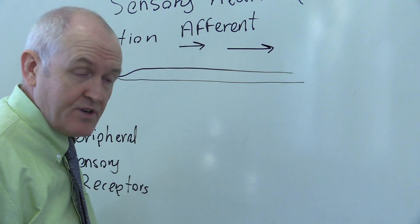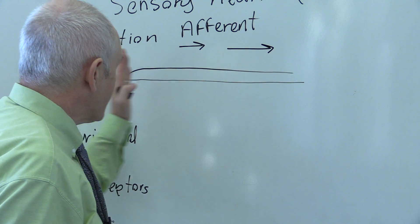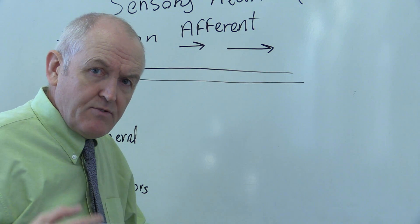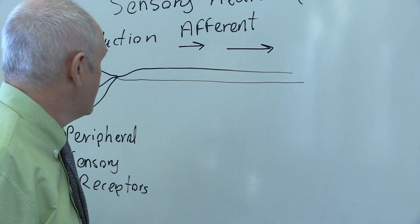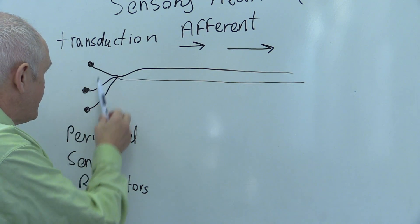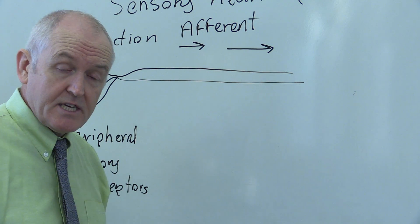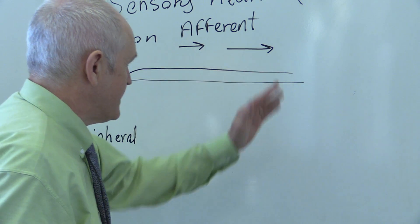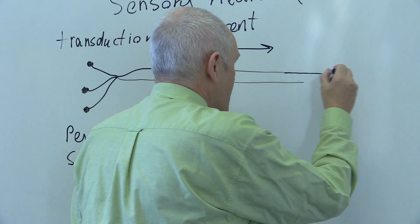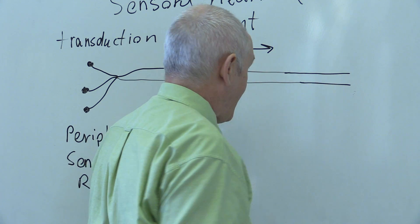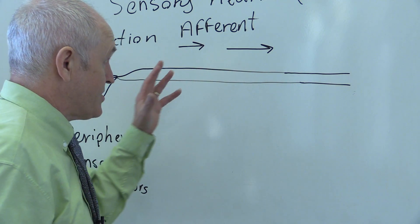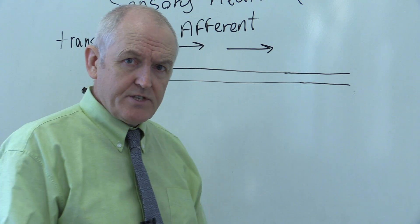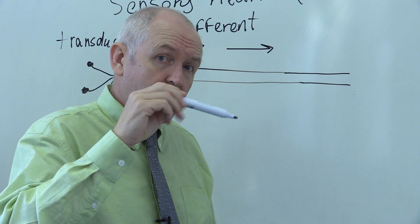Again, there is electrical activity — the nerve impulse is electrical in nature. There is depolarization; the initial depolarization is generated in the receptors as a result of transduction, and then that's propagated along. If for example this is in your hand, the information has got to travel in towards the central nervous system so you can feel what is in your hand.